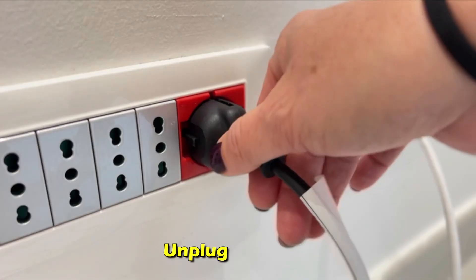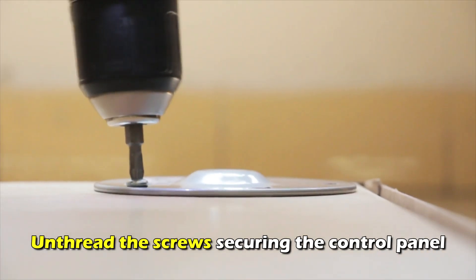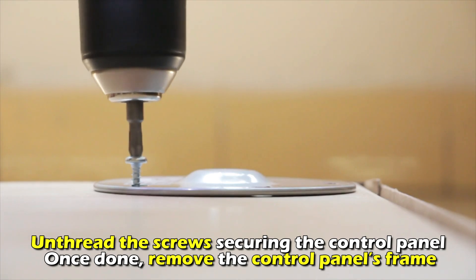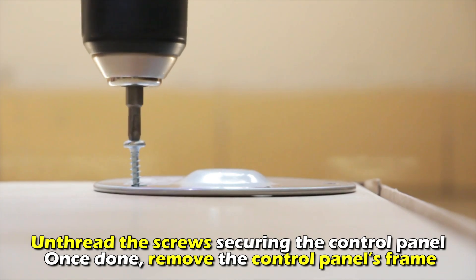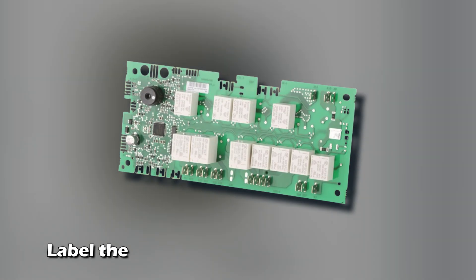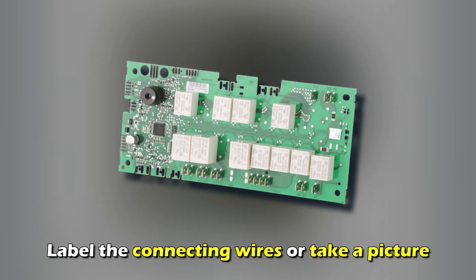Replace the control board. Unplug your dryer. Unthread the screw securing the control panel. Once done, remove the control panel's frame. Label the connecting wires or take a picture.